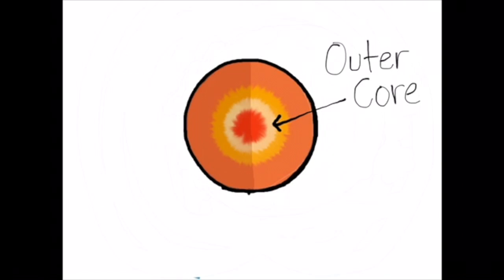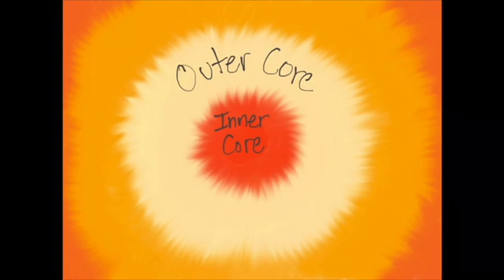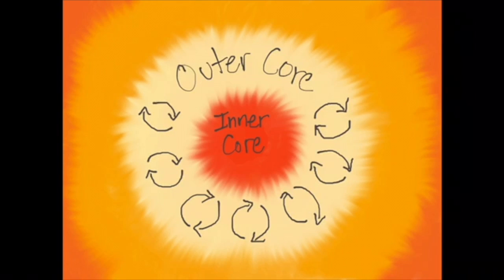Earth has a magnetic field because of its outer core. Its outer core is made of liquid metals. The convection currents that move the liquid metals make electric currents, which creates the earth's magnetic field.